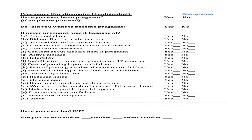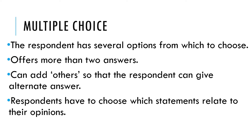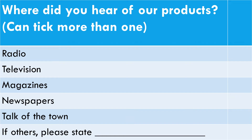The second type is multiple choice questions. The respondents have several options from which to choose, and are offered more than two answers. You can also add 'others' so that respondents can give alternative answers. Respondents have to choose which statement relates to their opinion. For example: 'Where did you hear of our product? You can take more than one.' Options include radio, television, magazine, newspaper, or talk of the town. If no answer matches their opinion, they can write their own under 'If others, please state.'